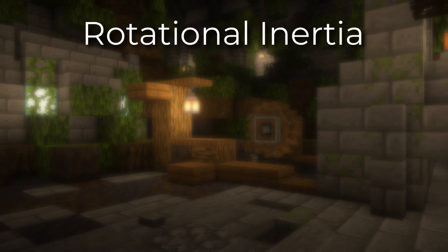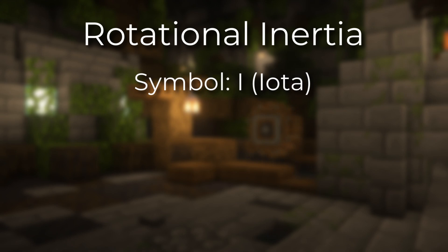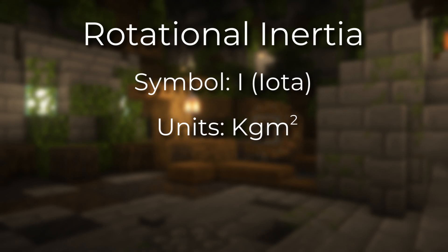So to begin, let's start with rotational inertia. It is signified by the symbol Iota, which just looks like an I, with units of kilograms times meters squared.